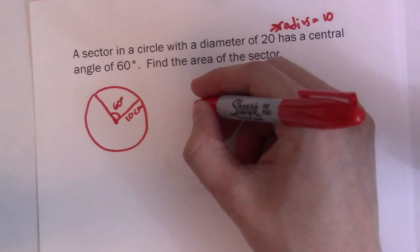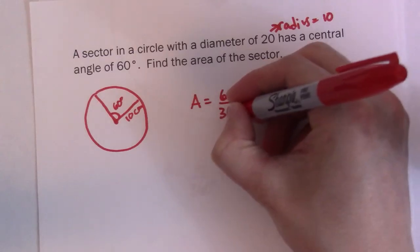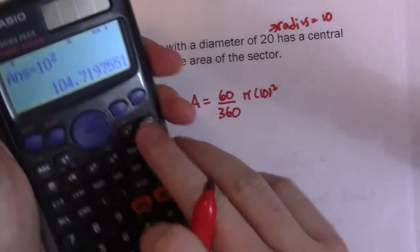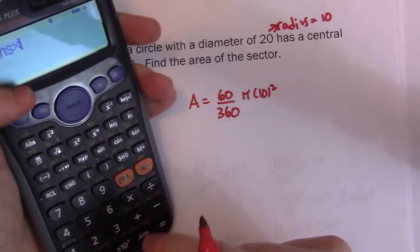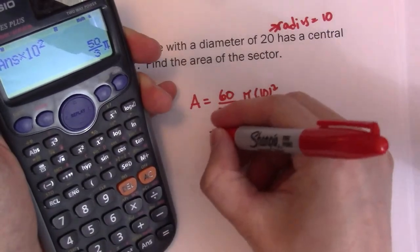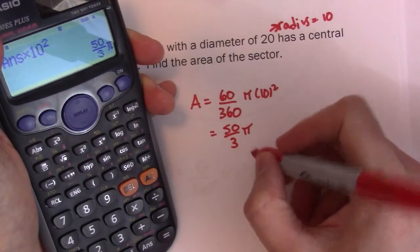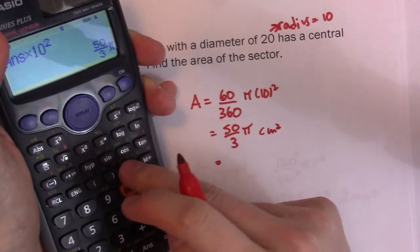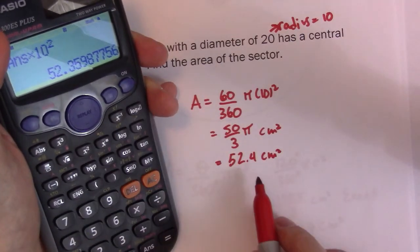Just got to go ahead and use my formula. I'll do 60 divided by 360 pi times 10 squared. I'll break it up by calculator again. 60 divided by 360 times pi times 10 squared. This time I get 50 over 3, which kind of makes sense because I get half the angle. 50 pi over 3, and that's centimeters squared. I'll work at the 52.4 centimeters squared is the approximate measurement.